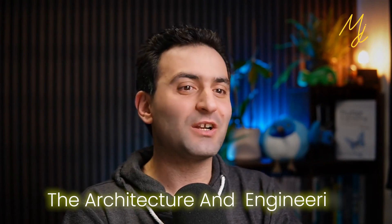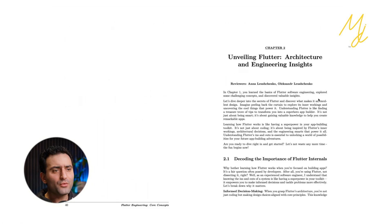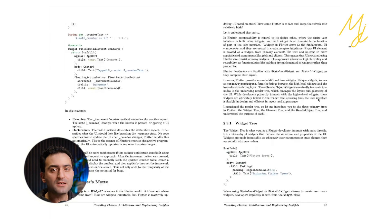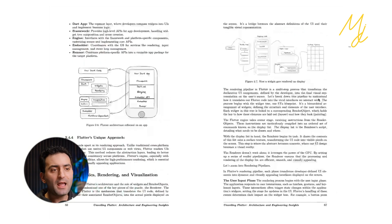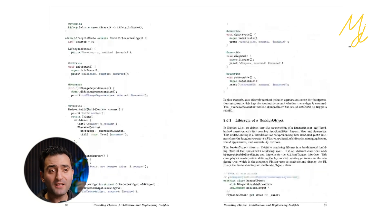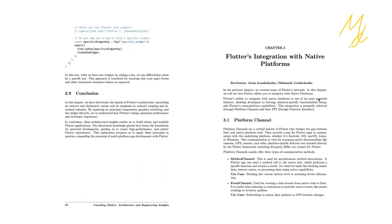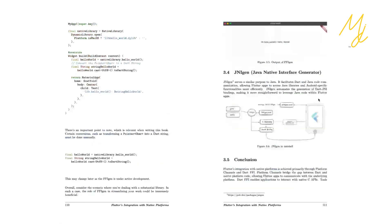Chapter two is a must-read chapter — I strongly believe all Flutter developers must read it. You learn a lot about the architecture and engineering inside Flutter itself, including different trees, their lifecycle, render pipelines, and much more. It's the longest chapter in the book. Then we talk about native platform integration, platform channels, and other options including newer options like FFI and JNI.